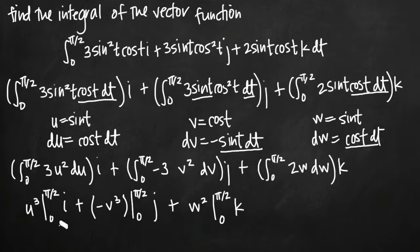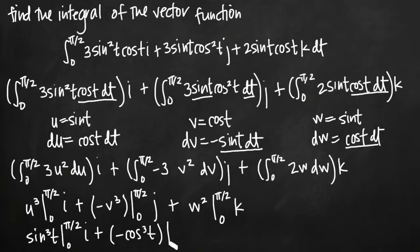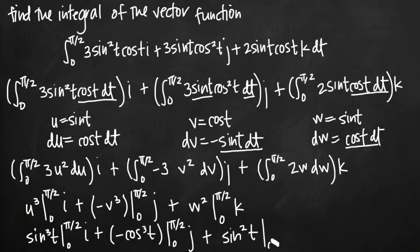Before evaluating at the limits, we back-substitute. Since u equals sine t, u cubed becomes sine cubed of t, evaluated from 0 to pi over 2, times i. Since v equals cosine t, negative v cubed becomes negative cosine cubed of t, evaluated from 0 to pi over 2, times j. Since w equals sine t, w squared becomes sine squared of t, evaluated from 0 to pi over 2, times k.